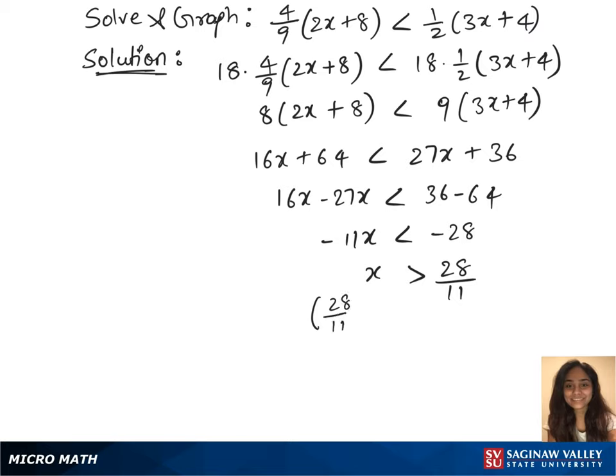So that's 28 over 11 comma infinity. And we need a number line to plot this. We'll plot it in the decimals. So 28 over 11 is approximately 2.54.